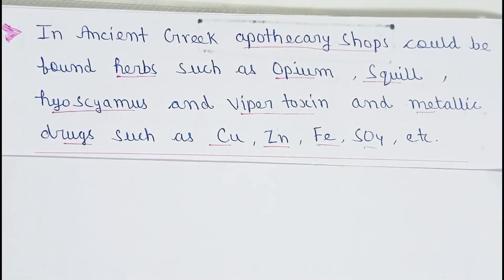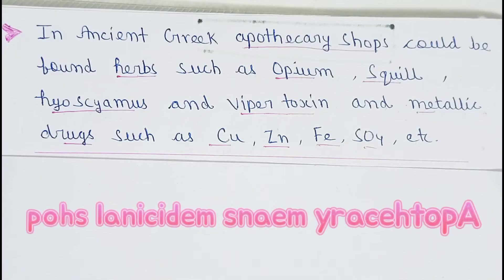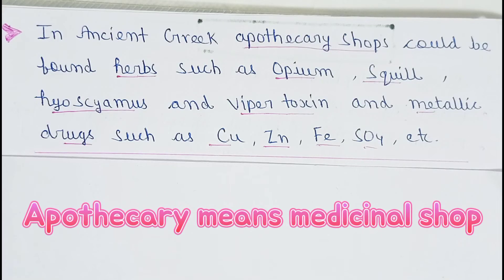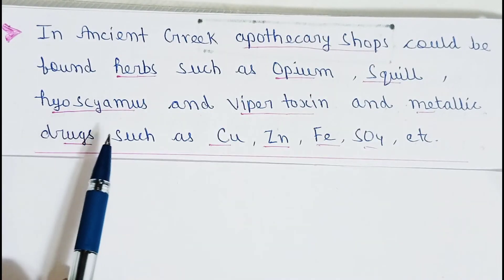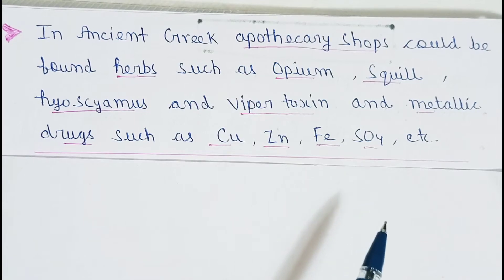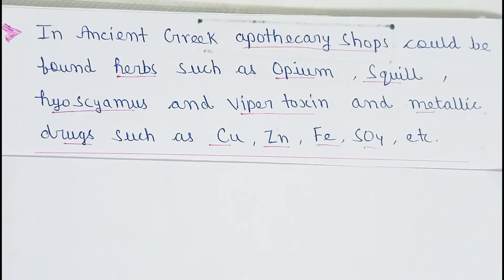Ancient Greek apothecary shops यानी medicinal shops थे, वहाँ पर कुछ herbs — छोटी वाली जो पौधे होती हैं — पाए गए थे, जिनमें आया opium, squill, hyoscamus, और viper toxins। और कुछ metallic drugs भी पाए गए थे, जिनमें आता है copper, zinc, iron, sulfate, आदि। ये ancient लोग इन सभी medicinal plants और metallic drugs का उपयोग करके diseases का treatment करते थे।